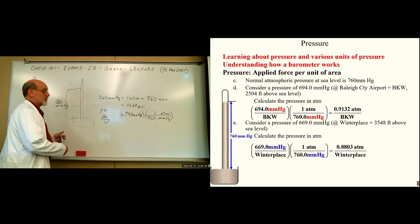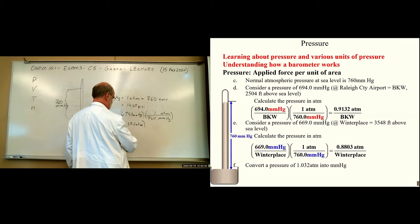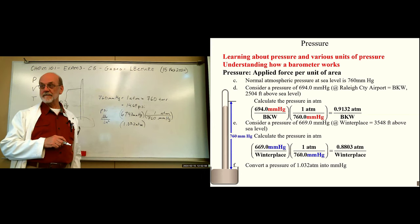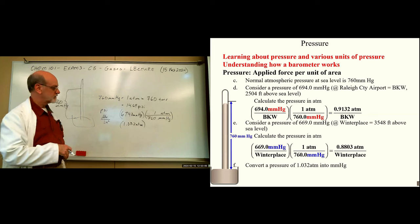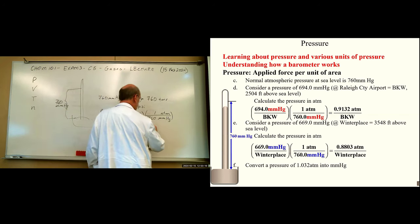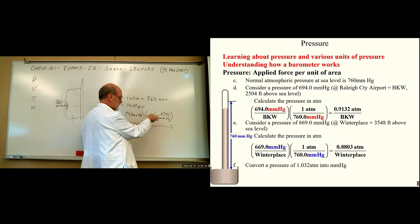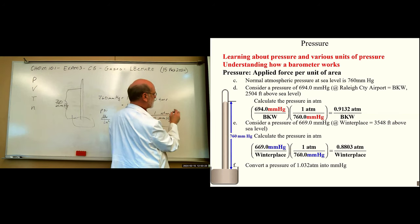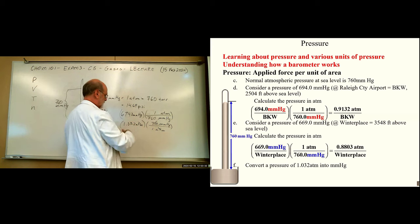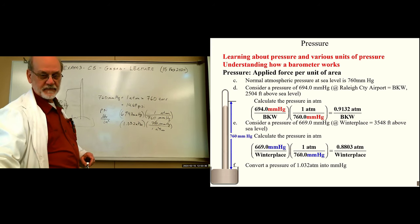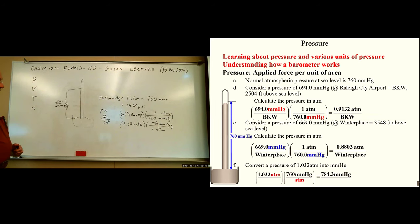For a conversion from atmospheres to millimeters of mercury: if we have 1.032 atmospheres, we'd be just below sea level — maybe at the Dead Sea or Death Valley. You would get a higher than one atmosphere measurement. To convert, we just flip the conversion factor — all conversion factors are equal to 1, so we just flip it. 760 millimeters of mercury over one atmosphere; atmosphere cancels, and it should be greater than 760. The answer is 784 millimeters of mercury for that atmosphere.